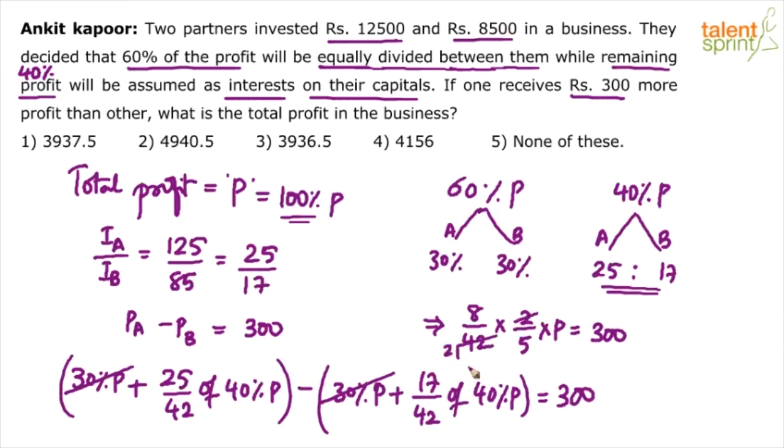Now solve what happens? This is 21 times. So P will be 300 into 5, which is 1500, into 21 by 8. Do the calculation. I think 1500 by 8 will be 200 minus 12.5. So this is 187.5 into 21. I mean calculations you will work out. 187.5 into 21.